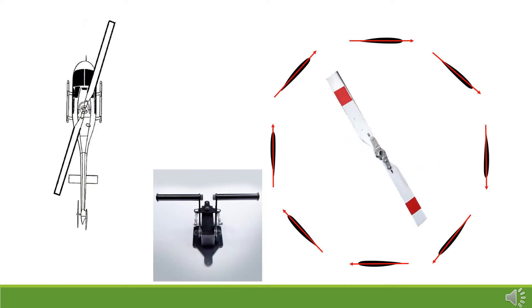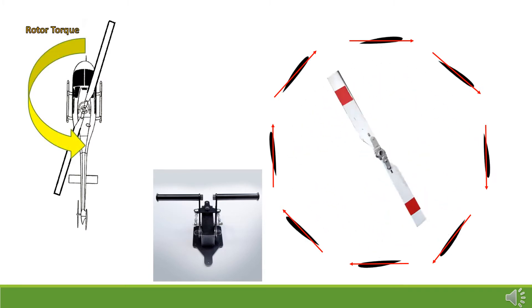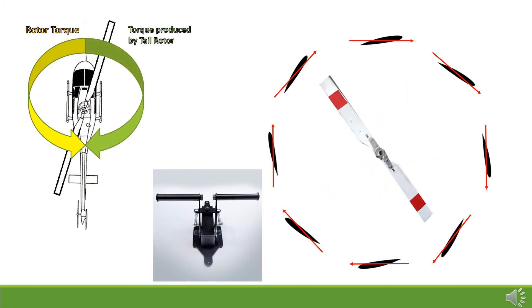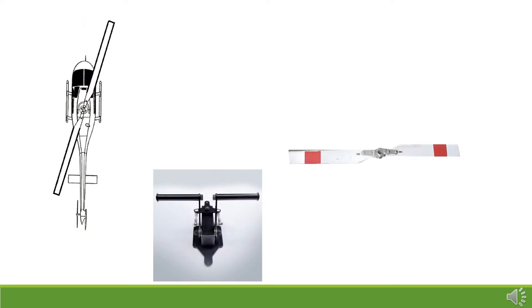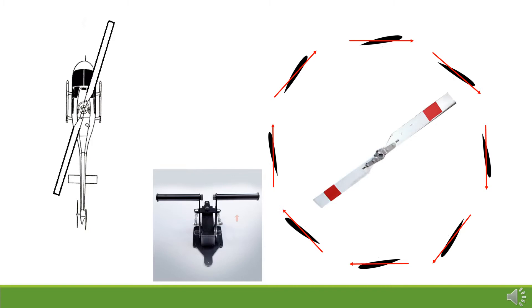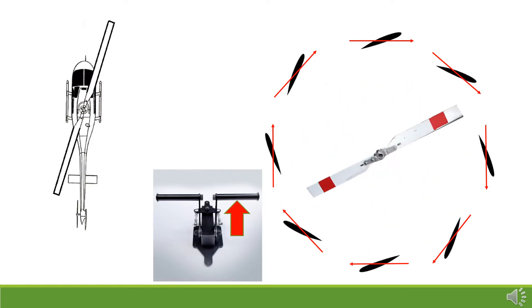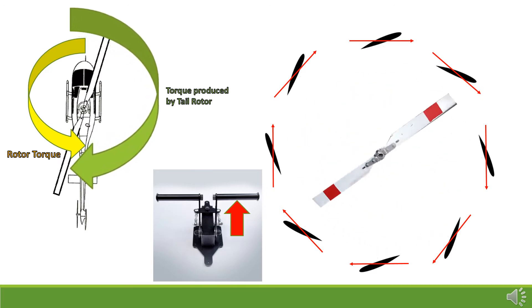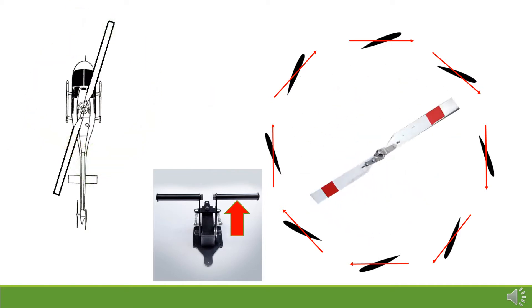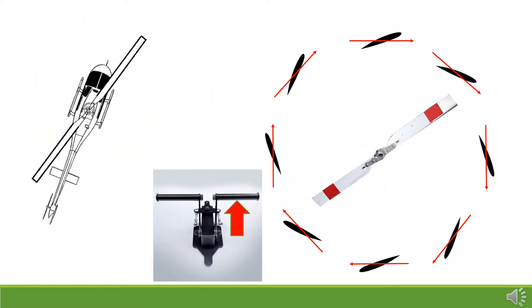The anti-torque pedals are located in the same place as the rudder pedals in an airplane and serve a similar purpose — they control the direction that the nose of the aircraft points. As the main rotor is constantly producing torque, the tail rotor blades must be set at a pitch angle greater than zero to counteract this torque. When rotor torque and counter torque are equal, the helicopter maintains a constant heading. To rotate the helicopter to the right, the pilot depresses the right anti-torque pedal, increasing the pitch of the tail rotors. By Newton's second law, the helicopter rotates in the direction of the larger torque — in this case, clockwise, or turning to the right.